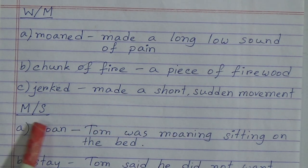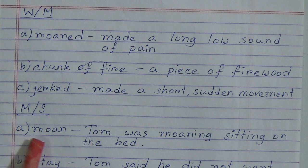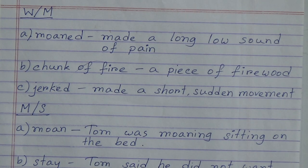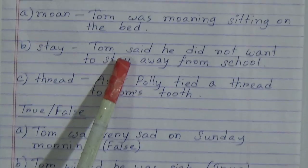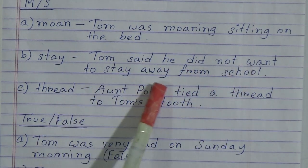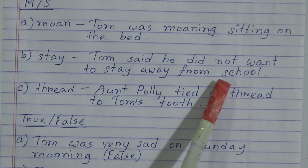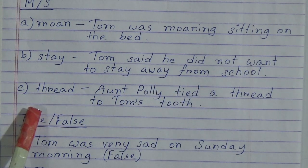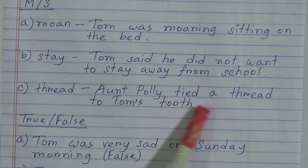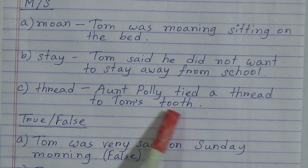Next is making sentences. Number A — moan: 'Tom was moaning sitting on the bed.' Number B — stay: 'Tom said he didn't want to stay away from school.' Number C — thread: 'Aunt Polly tied a thread to Tom's tooth.'